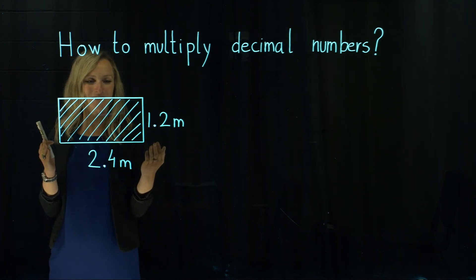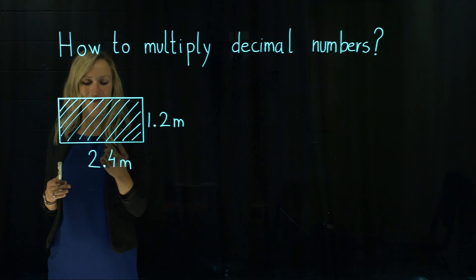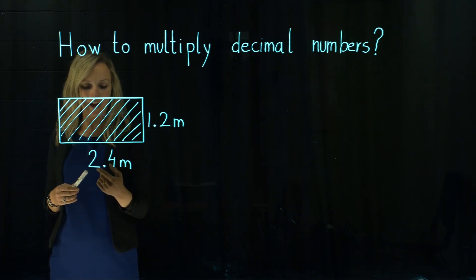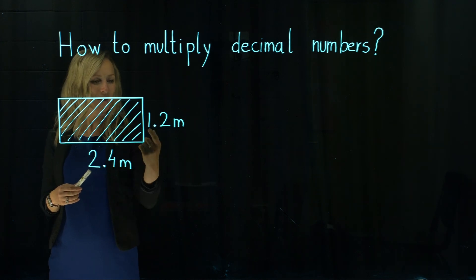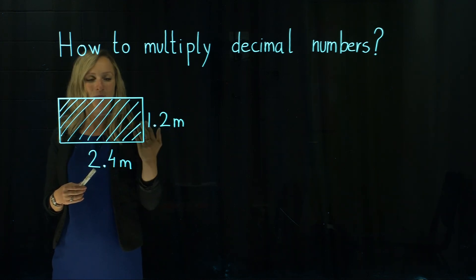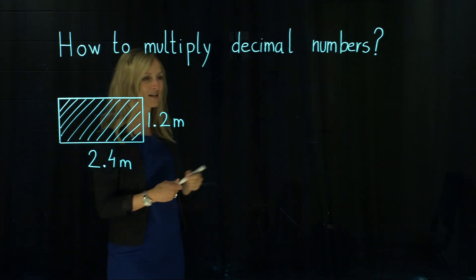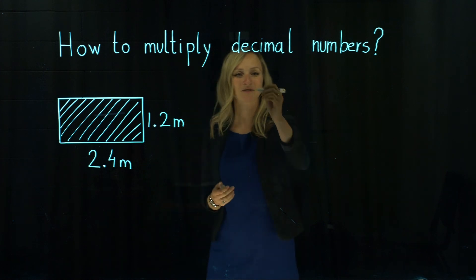Here we have a plasterboard and the dimensions of a standard plasterboard are 2.4 meters and 1.2 meters. To find the area of the standard plasterboard we need to multiply those two numbers together.